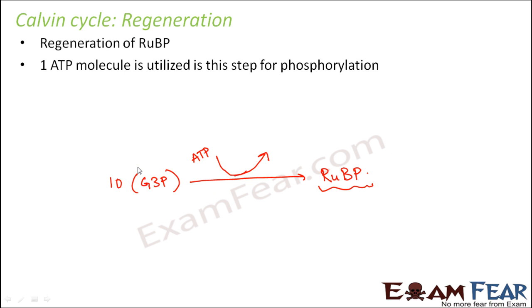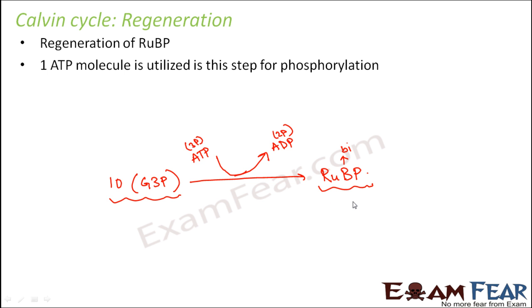So here phosphorylation occurs because ATP gets converted into ADP. ATP had three phosphate groups and RuBP had two phosphate groups, so one phosphate gets added. Note that the '3' in glyceraldehyde 3-phosphate denotes the position of the phosphate group, not the number — the number is denoted by biphosphate, triphosphate, etc. The extra inorganic phosphate from ATP gets added to form ribulose biphosphate, and that is how RuBP is regenerated and the cycle is completed.